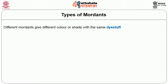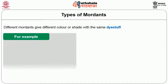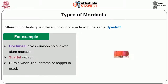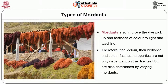Different mordants give different colours or shades with the same dye stuff. For example, cochineal gives crimson colour with alum mordant, scarlet with tin, and purple when iron, chrome or copper is used. Mordant also improves the dye pickup and fastness of colour to light and washing. Therefore, final colour, brilliance and colourfastness properties are not only dependent on the dye itself but are also determined by the mordant used.